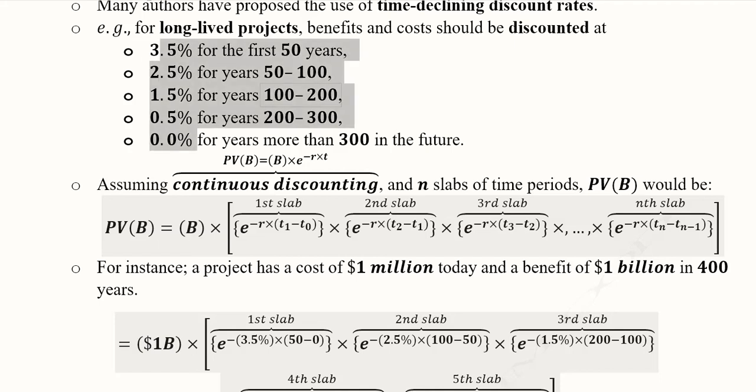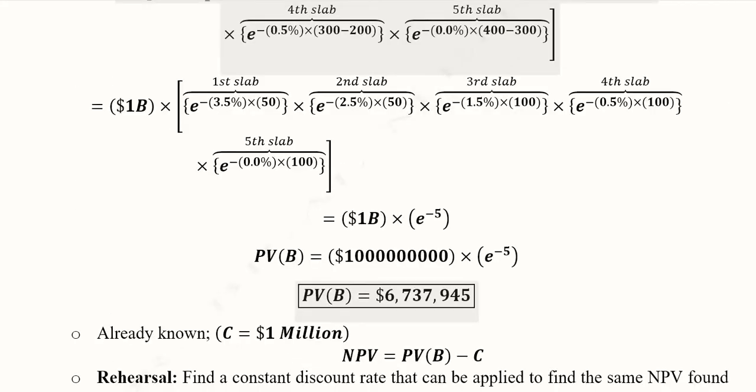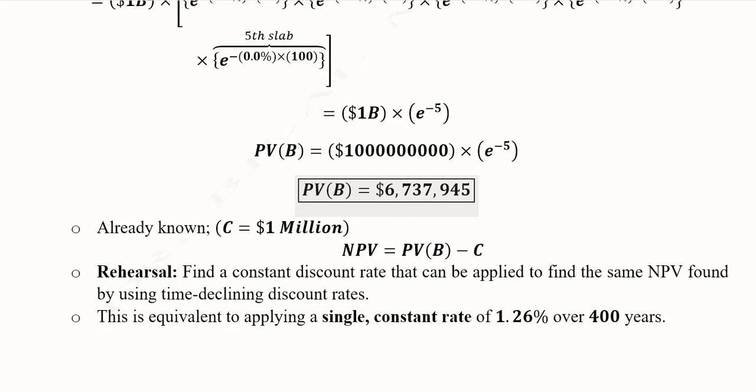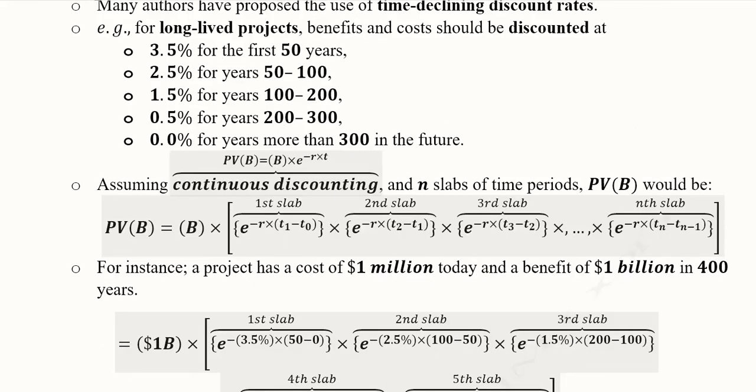So that calculation is already done. If we use this discount rate that is 1.26% over the 400 years, the answer of the NPV or the present value will be the same. So it is equivalent to using a constant discount rate or by using a variety of the discount rates that are time declining.